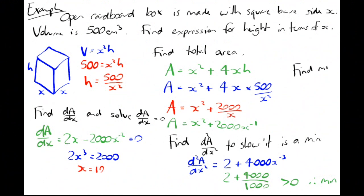Find the minimum value of the area. I'm going to look back at my A formula. A = 10² + 2000/10, so A = 100 + 200. The minimum value of A is 300.